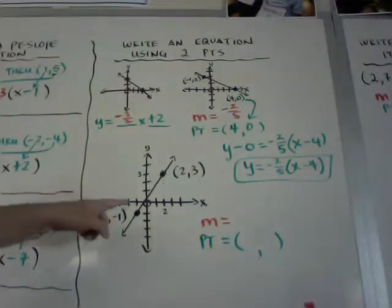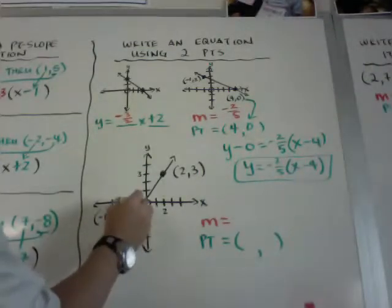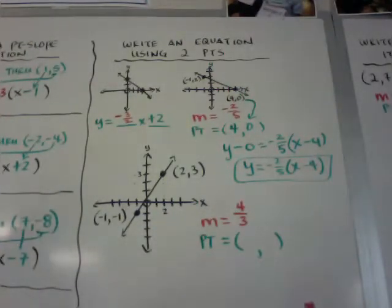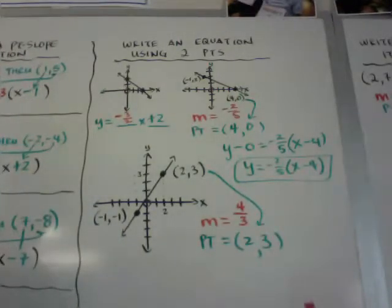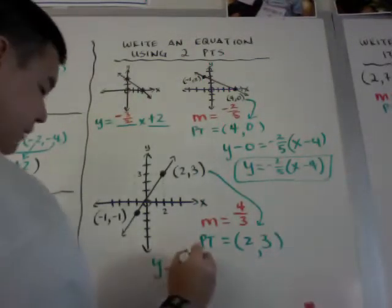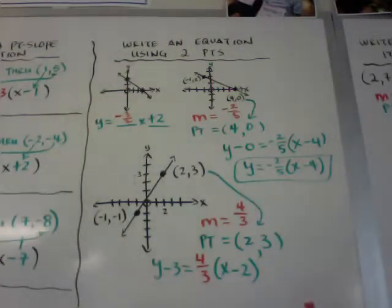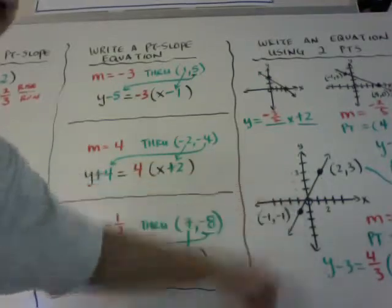Here's another graph that doesn't go through the y-intercept perfectly, so we find the slope again. Going from left to right: up 4, over 3, giving a slope of 4 over 3 — a positive slope. I'll use the point 2 comma 3. The equation is y minus 3 equals 4 thirds times the quantity x minus 2. That's how you write an equation: find the slope from the graph and use one of the given points.